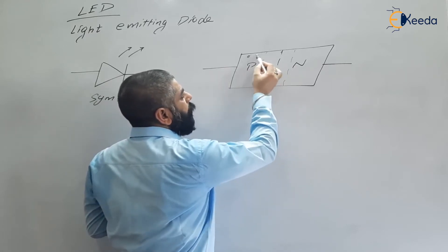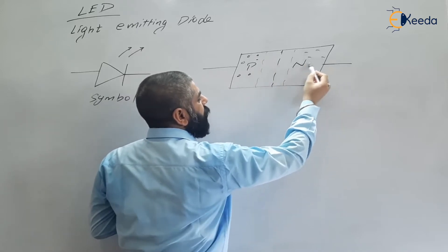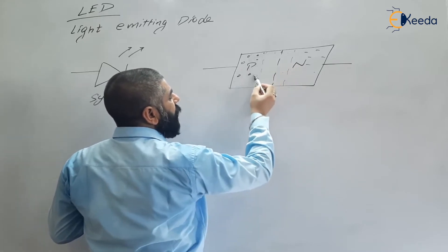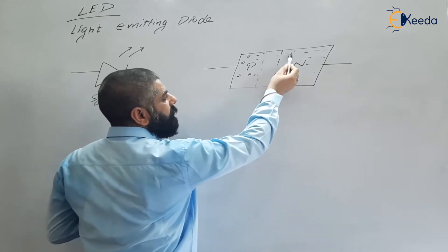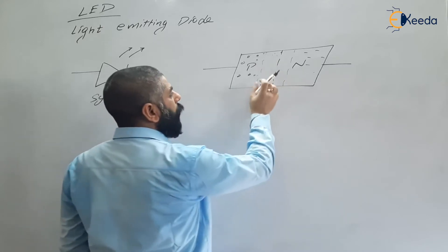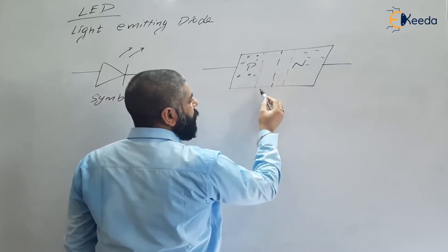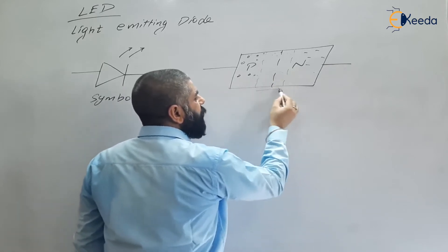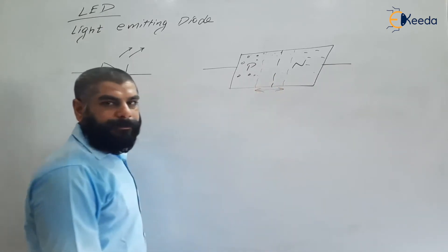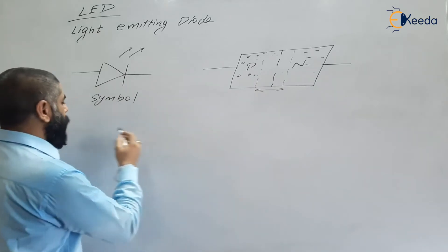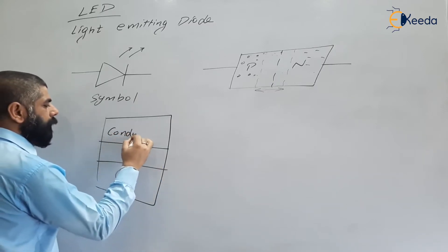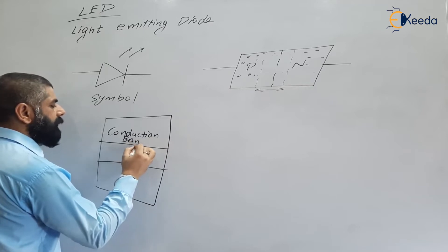In a PN diode, on the P side holes are the majority carriers, and on the N side electrons are the majority carriers. In the depletion region, because of the difference in concentration, holes move one way and electrons move the other way, forming the depletion region. When forward biased, recombination of electron-hole pairs occurs in this region. In terms of the energy band diagram, there is a conduction band and a valence band.